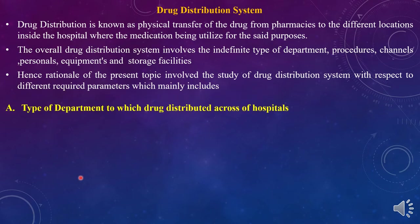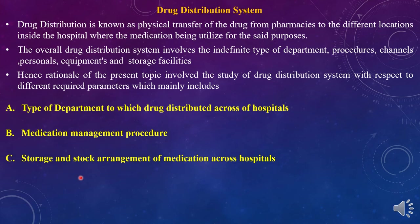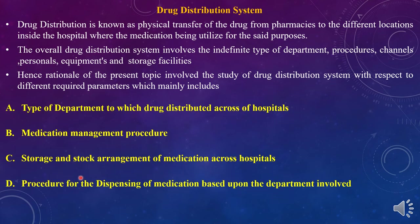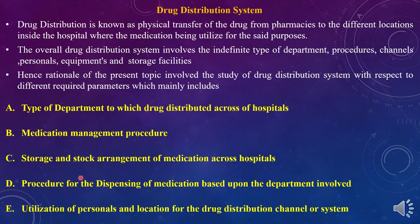The rationale of the present topic is to study the drug distribution system with respect to different required parameters, which mainly include: the type of department to which the drug is distributed across the hospital; the medication management procedure required for the drug distribution system; storage and stock arrangement of medication across the hospital; procedure for dispensing medicines based on the department — either OP or IP; and utilization of personnel and location for the drug distribution system.